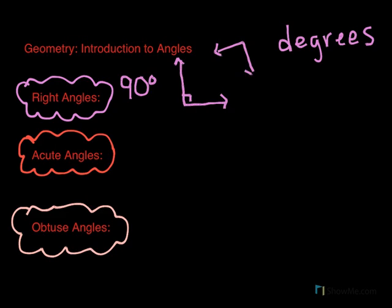You'll see 90 degree angles in squares, in rectangles, some triangles. You'll see them all over the place, but they form exactly 90. Okay, so that would be a right angle.